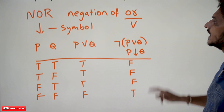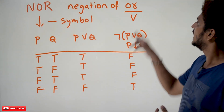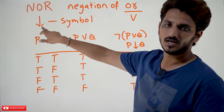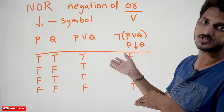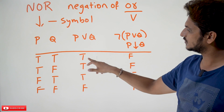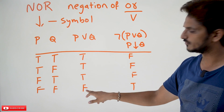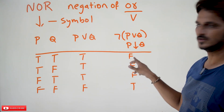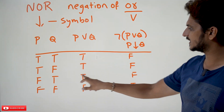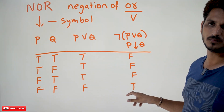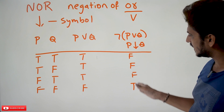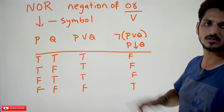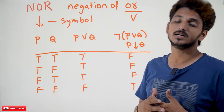We also have the NOR connective — negation of OR, which means negation of disjunction. The symbol for NOR is given as negation of disjunction. For P NOR Q: P disjunction Q gives true, true, true, false — negating gives false, false, false, true. This is the truth table for the NOR connective.